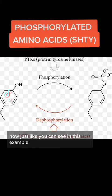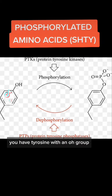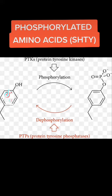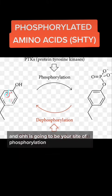Just like you can see in this example, you have tyrosine with an O-H group. The O-H group is coming off of this aromatic molecule right here, and O-H is going to be your site of phosphorylation.